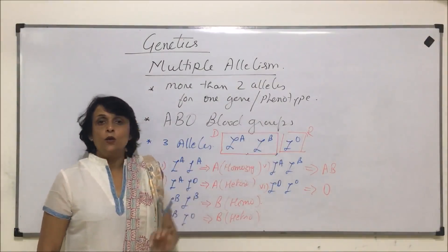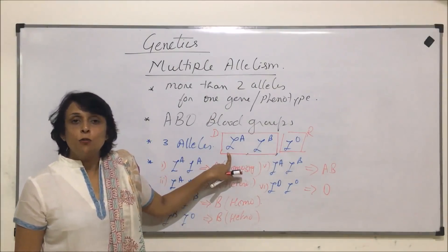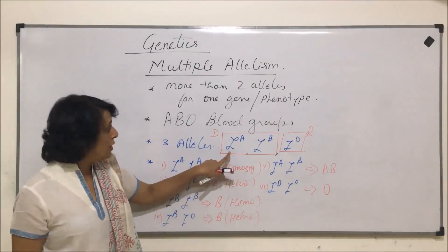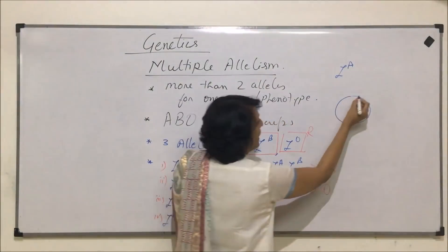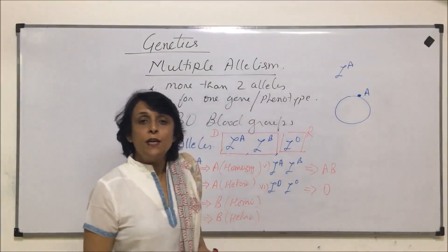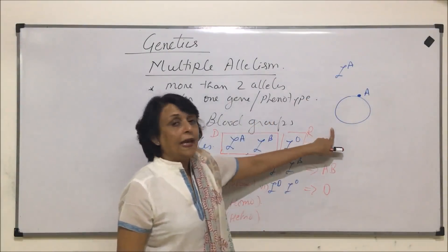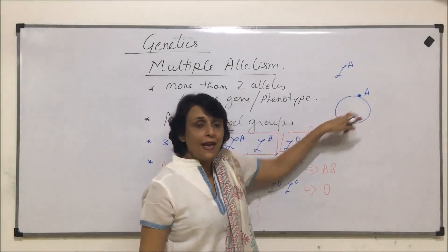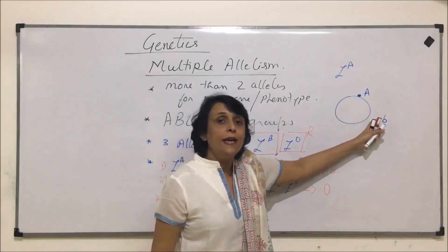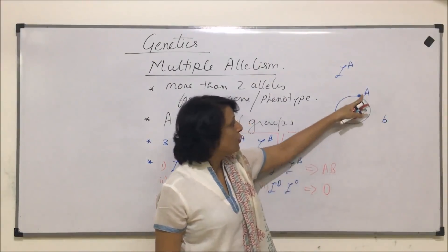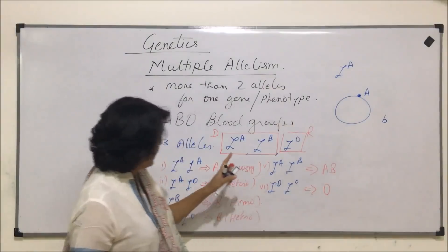Now, what exactly do A, B, and O mean? We are talking about a gene responsible for formation of a particular protein or sugar. The RBC of an individual with IA will have antigen A on the membrane of the RBC. If the individual has blood group B, the antigen will be B. In a person with antigen A, there is antibody b — antibody is always written in lower case. This person cannot have antibody A because if there is antibody A, it would react with the antigen. So one type of antigen and the other type of antibody.